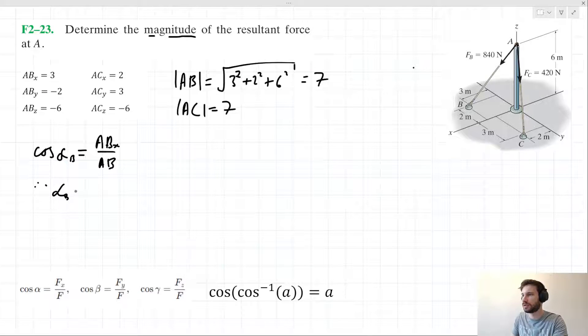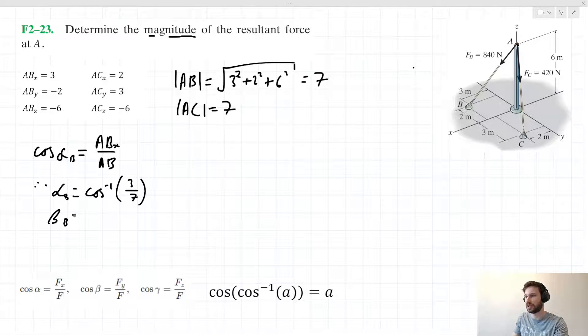alpha B equals the inverse cosine of 3 over 7. Beta B equals the inverse cosine of -2 over 7. And gamma B equals the inverse cosine of -6 over 7.